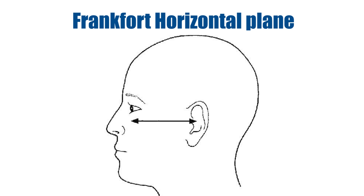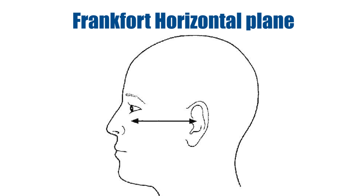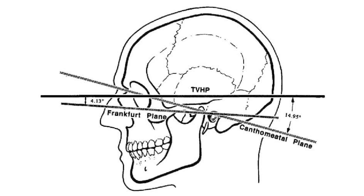Another reference plane used in patient positioning is the Frankfort horizontal plane, which connects the superior border of the external auditory canal with the infraorbital rim. This is also called the porion orbital plane. The canthomeatal line and the Frankfort horizontal plane make an angle of 10 degrees with each other.